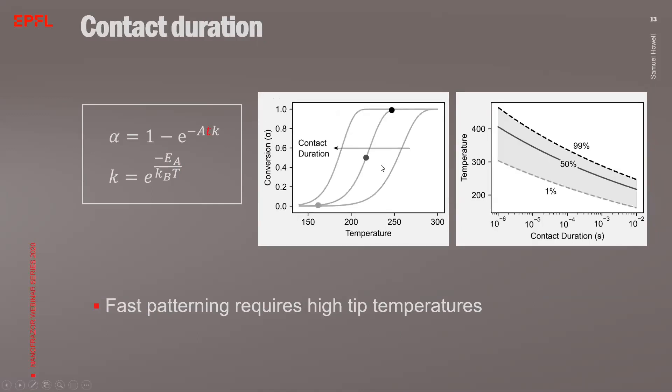The third important parameter is the contact time between the tip and the sample. As can be seen in the graph, for shorter tip-sample contact times, the reaction curve shifts towards higher temperatures. The temperature necessary to complete the reaction depends logarithmically on the heating time. Or in other words, the faster the writing speed or the shorter the contact time, the higher the temperature that is necessary to complete the reaction. This is the reason why for TSPL often higher temperatures are necessary to complete the reaction within a few microseconds, as compared to the macroscale where much longer heating times are used.